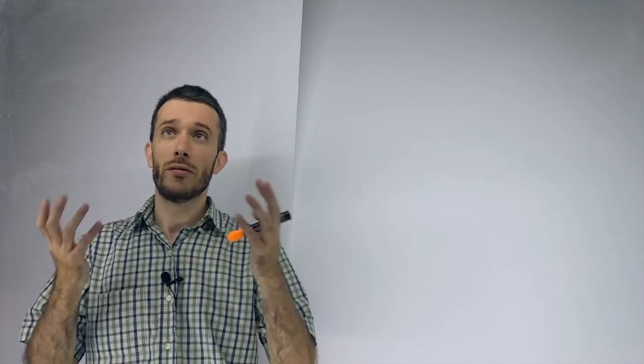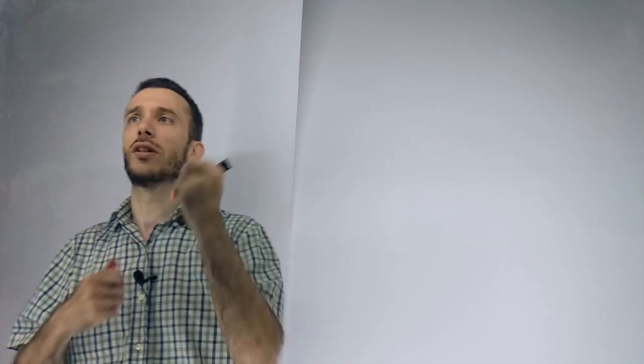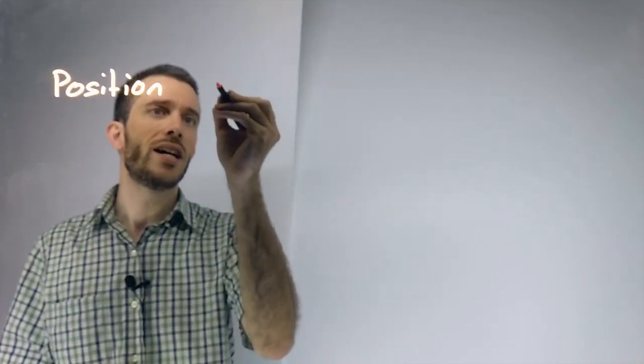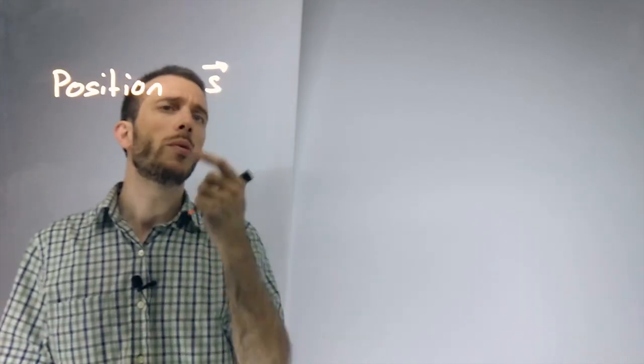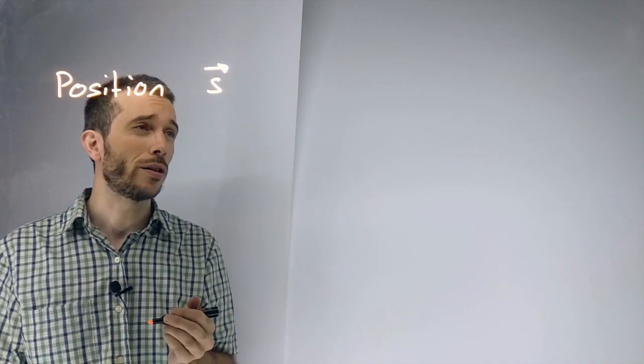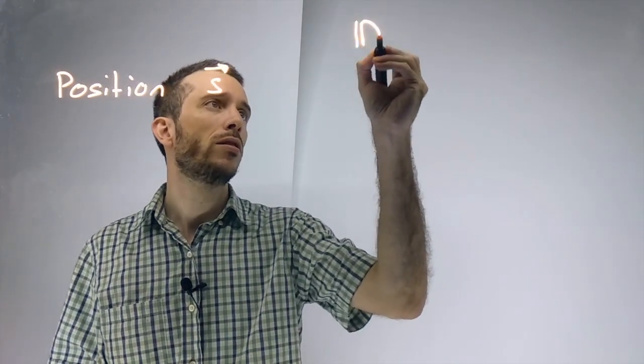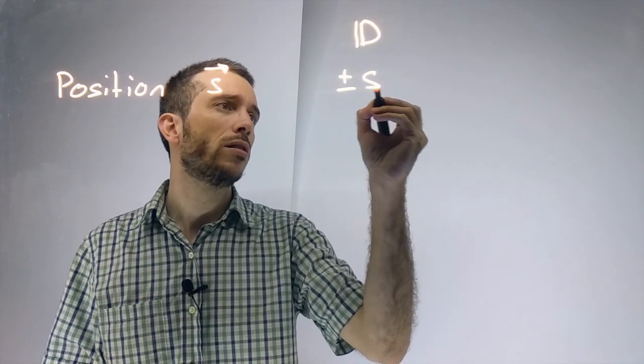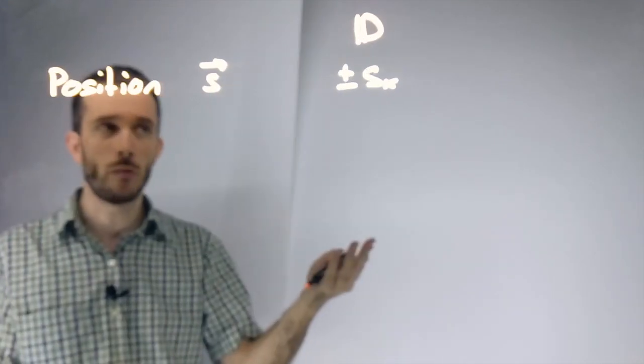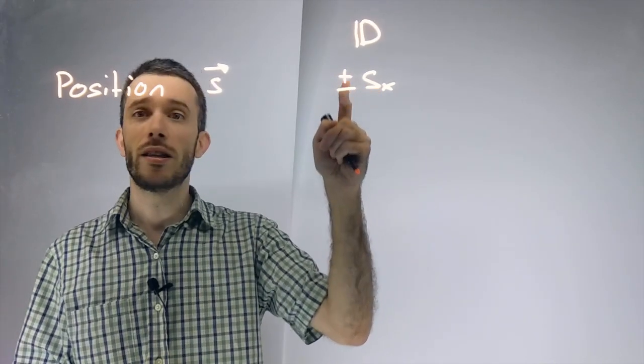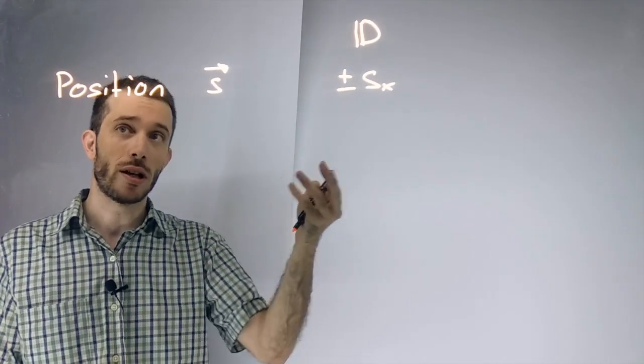In 1D kinematics, we use the letter S for position, which probably comes from the German word 'standort' meaning location. Now in 1D, this was plus or minus a position in x or a position in y. It is a vector as we have magnitude and direction indicated with plus and minus.